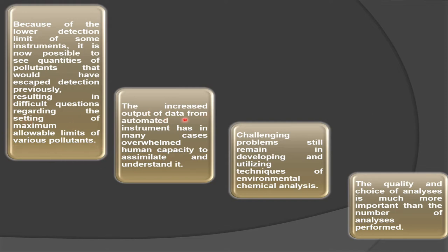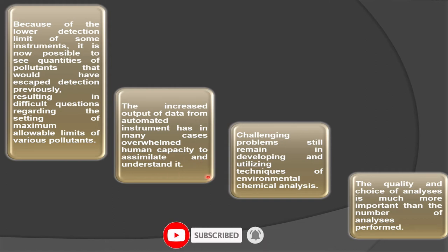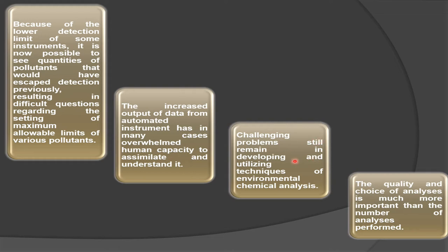The increased output of data from automated instruments has in many cases overwhelmed human capacity to assimilate and understand it. Not only do we have lower detection limits, but we also have the capacity to store data in computerized form. Humans need to not just absorb this data but also understand it, yet challenging problems still remain in developing and utilizing techniques of environmental chemical analysis.